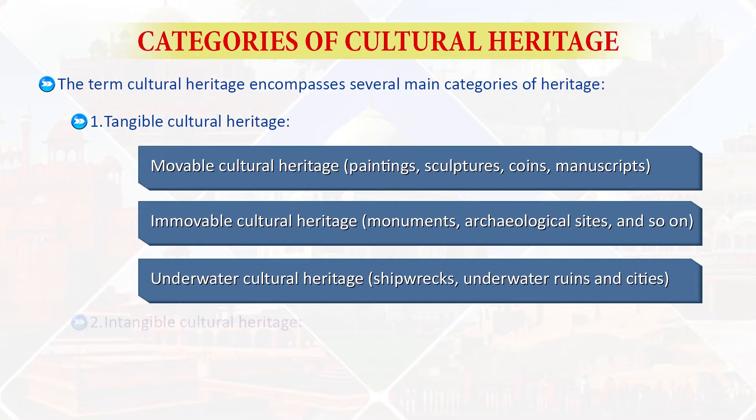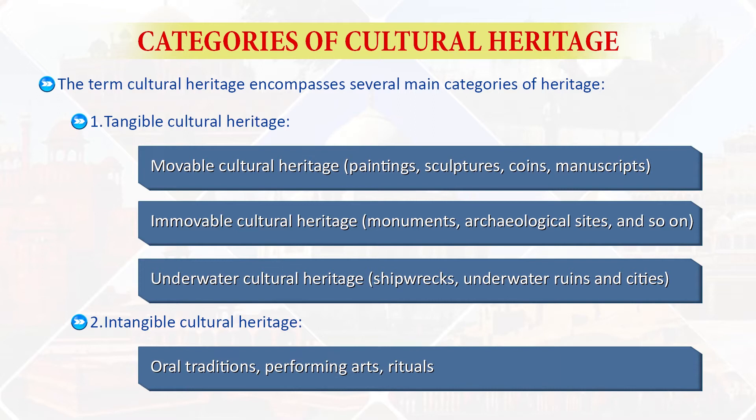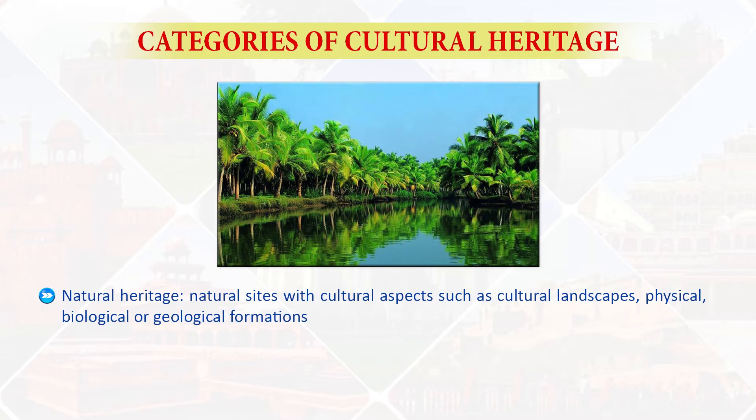Second is intangible cultural heritage, which includes oral traditions, performing arts and rituals. Natural heritage includes natural sites with cultural aspects such as cultural landscapes and physical, biological or geological formations. Heritage in the event of armed conflict is another category. Intangible cultural heritage refers to the practices, representations, expressions, knowledge and skills handed down from generation to generation. This heritage provides communities with a sense of identity and is continuously recreated in response to their environment.